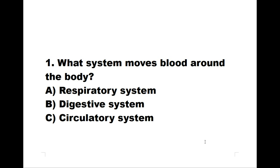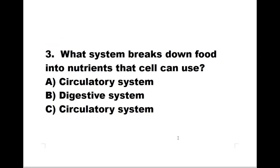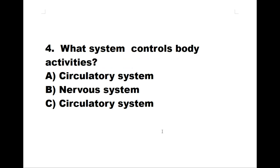Sorry guys, I missed number two, so let's go to number three. Number three: what system breaks down food into nutrients that cells can use? A: circulatory system. B: digestive system. C: respiratory system. The right answer is B, digestive system. Number four: what system controls body activities? A: circulatory system. B: nervous system. C: circulatory system. The correct answer is nervous system.